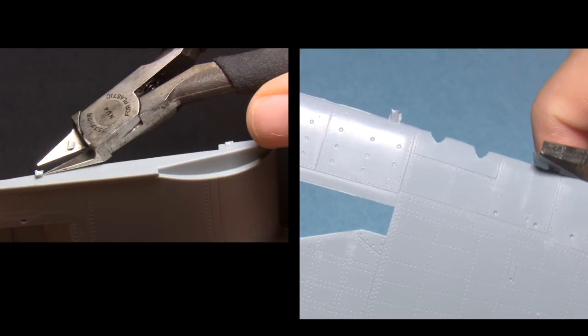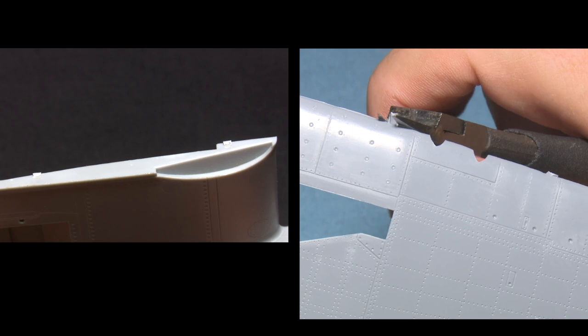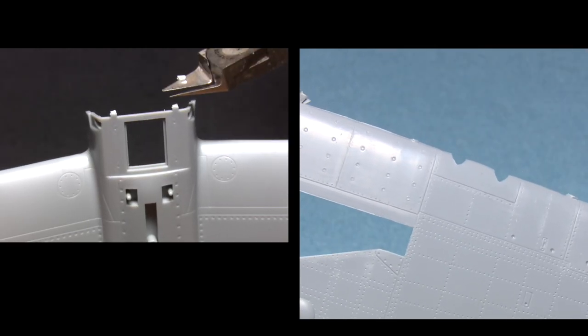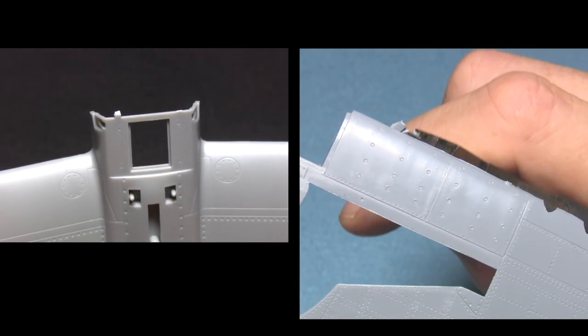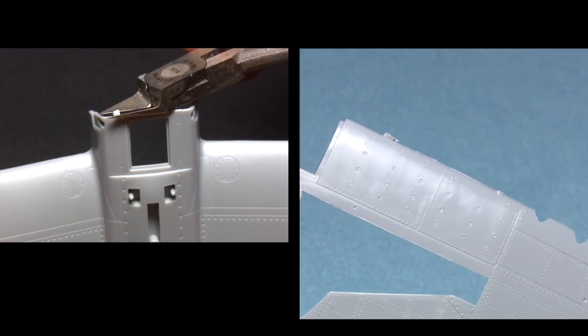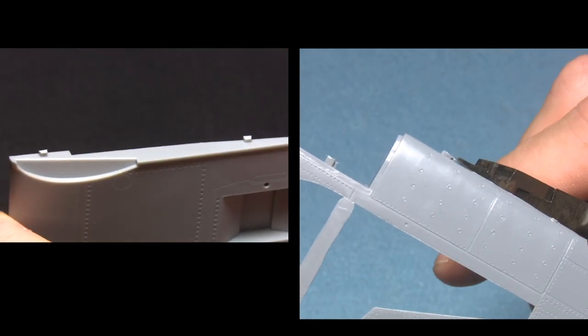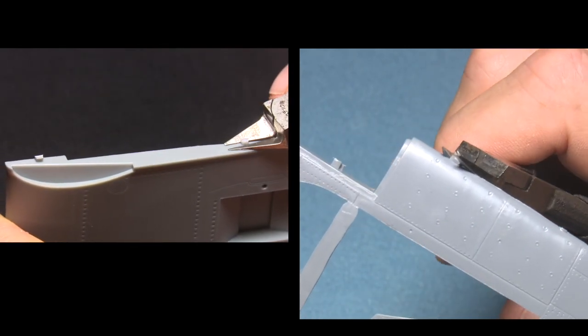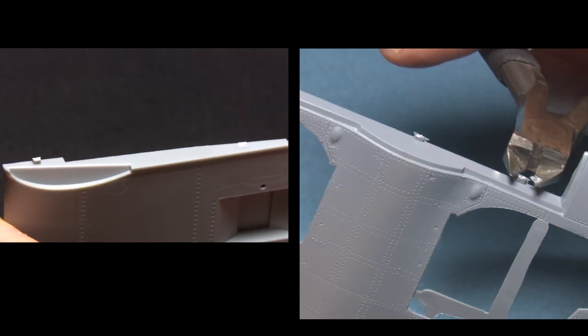This is to avoid damaging the part, as if you cut too close straight away, the stress in the plastic and the plastic sprue can actually cause damage to the part, which can be easily cleaned up afterwards, but it's additional work.